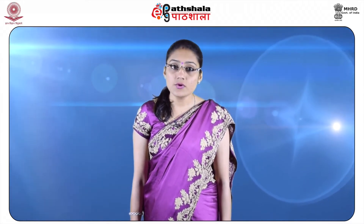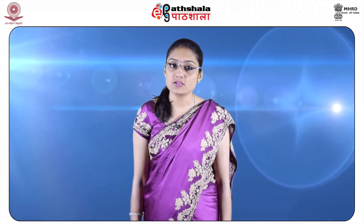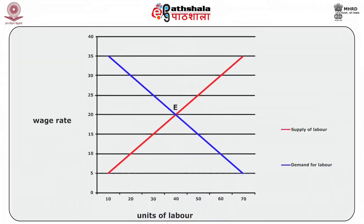The wage rate adjusts itself to ensure there is equilibrium between the demand for labour and the supply of labour. Since the market is free to adjust, everyone seeking a job finds a job. The figure represents a labour market where the demand and supply curves of labour are given. The equilibrium is marked as E, which is the point of intersection of both curves. At E, labour demand equals labour supply, and in such a scenario there is no involuntary unemployment.